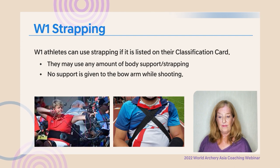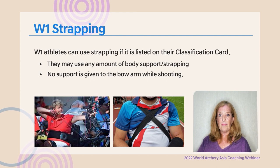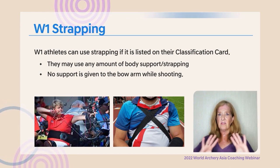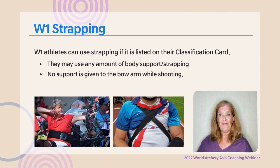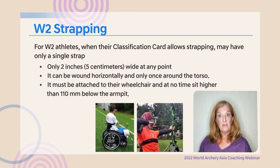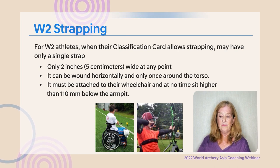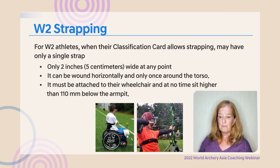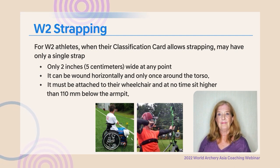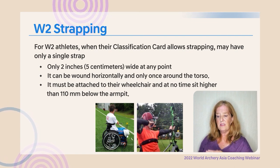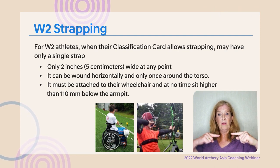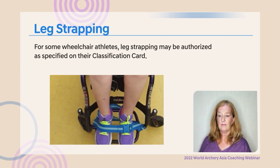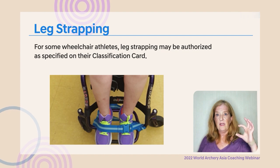For W1s, strapping must be on the classification card but can be any amount of body support or configuration, as long as it doesn't give support to the bow arm while shooting — for example, much wider than five centimeters or crisscrossed. W2s have limitations: only five centimeters wide, wound around once horizontally, and 110 millimeters below the armpit. Leg strapping must also be listed on the classification card and is limited to five centimeters wide.